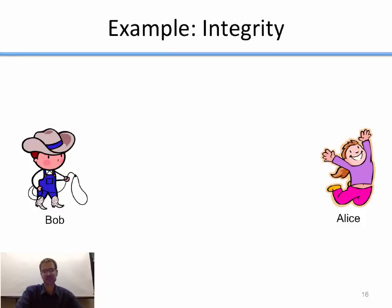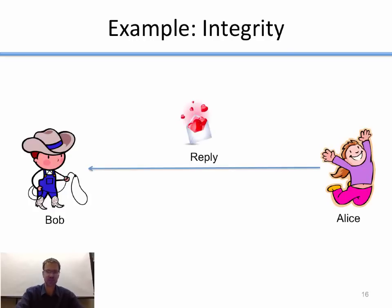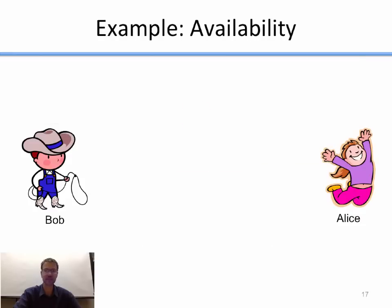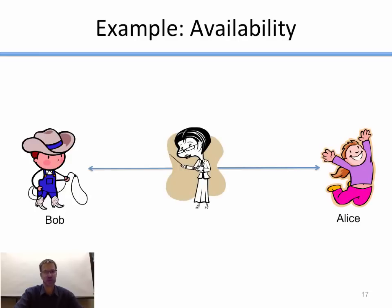When it comes to integrity — let's say Bob sent his note and one day finds a reply on his desk. He's thrilled, but then he thinks: how do I know this actually came from Alice, and how do I know no one changed what it said? He wants integrity — to verify the message is actually from Alice and hasn't been modified. And the third thing Bob wants is availability: now that he and Alice like each other and want to send messages back and forth, if the teacher finds out and gets in the way, Bob wants availability — nothing should prevent him from passing notes with Alice.